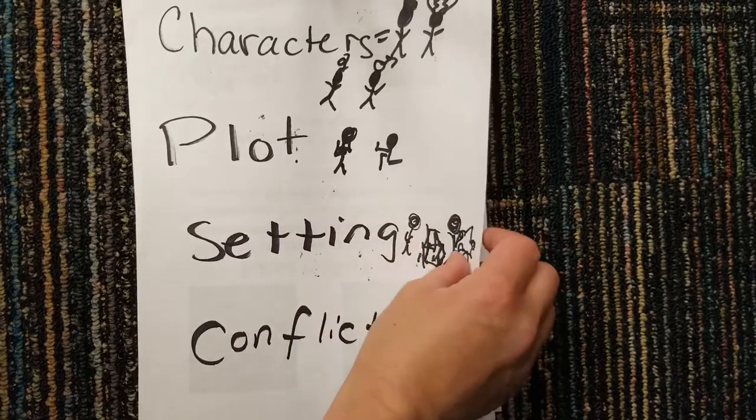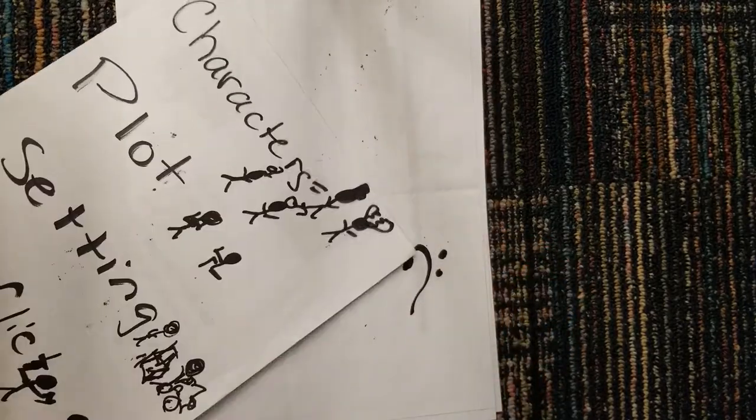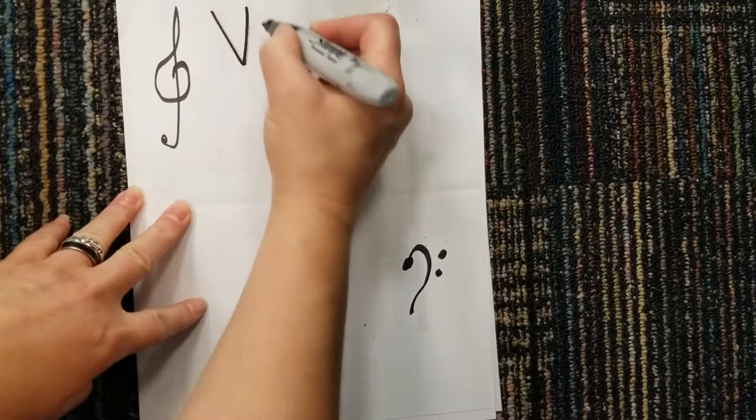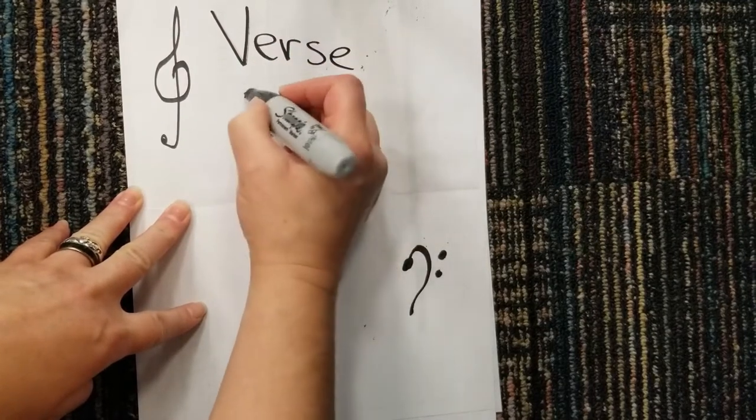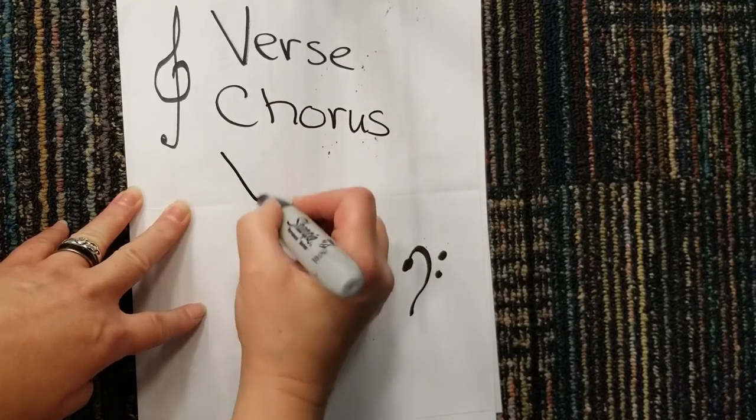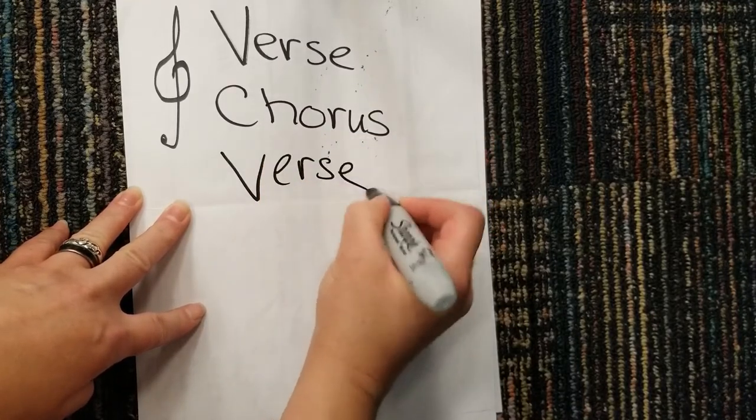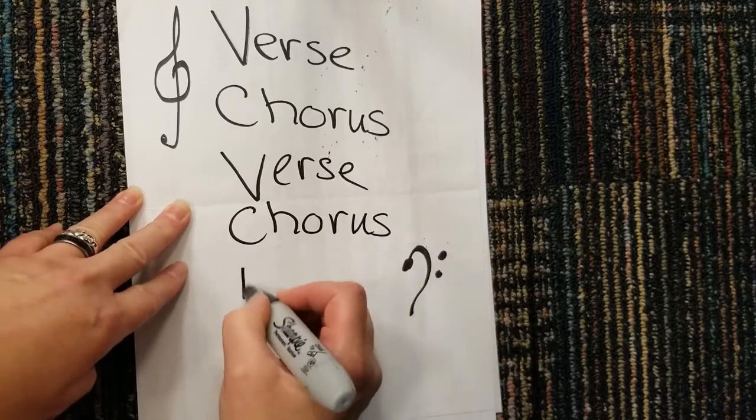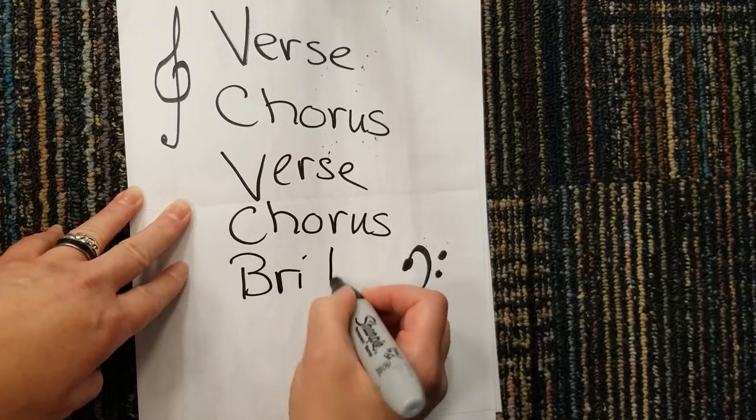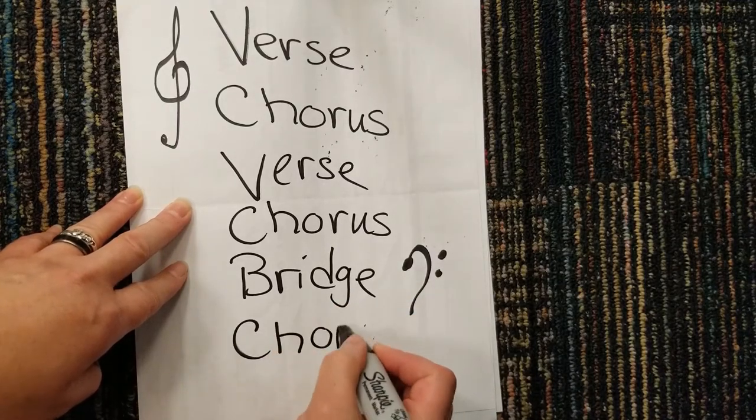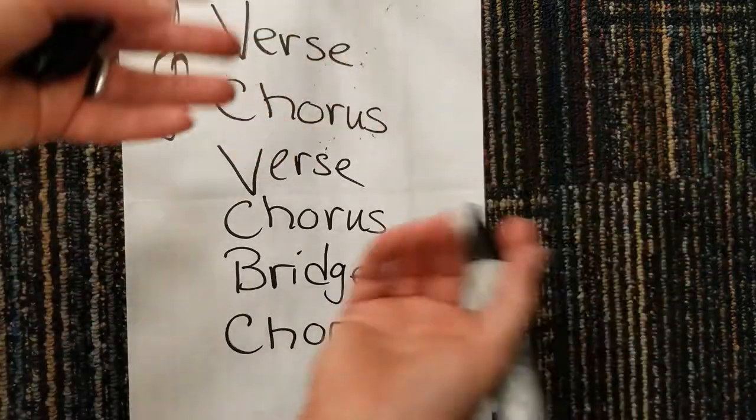It probably sounds like this: the verse, the chorus, another verse, another chorus, and then a bridge, and another chorus, just to, you know, tie it all up in a nice bow.